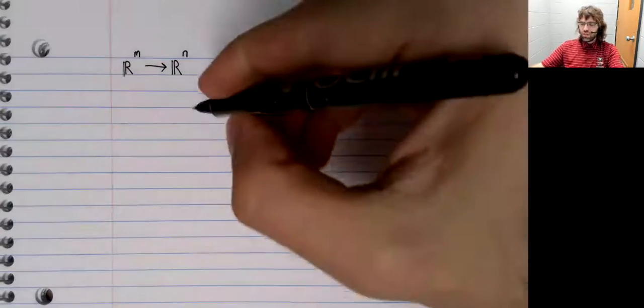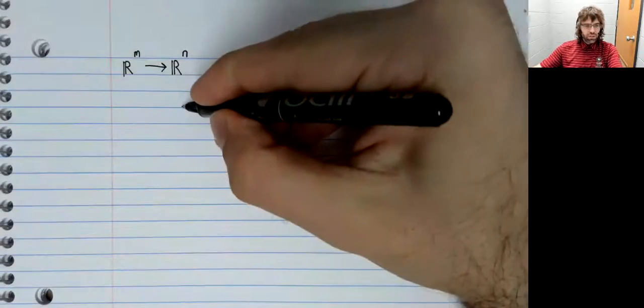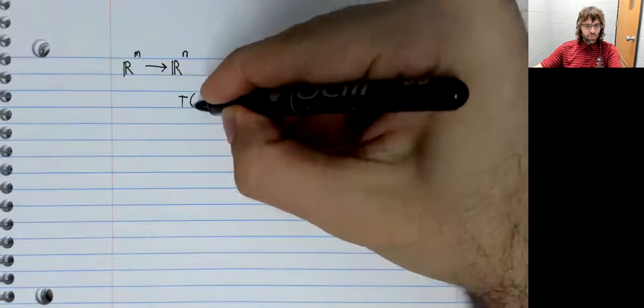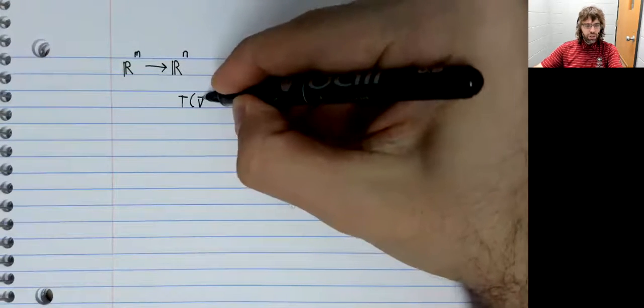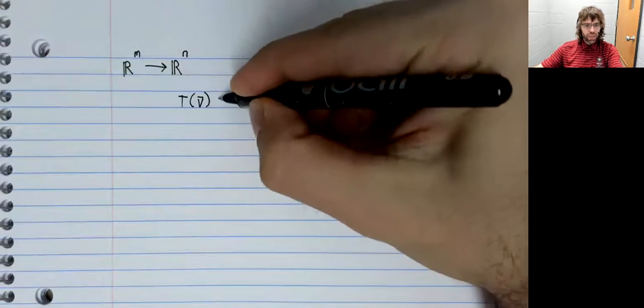When is a transformation one to one? And when is it onto?